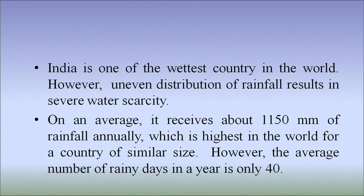However, uneven distribution of rainfall in different states of India results in severe water scarcity. On an average, India receives about 1150 mm of rainfall annually, which is highest in the world for a country of similar size. However, the average number of rainy days in a year are only 40. Water is one of the most poorly managed resources.